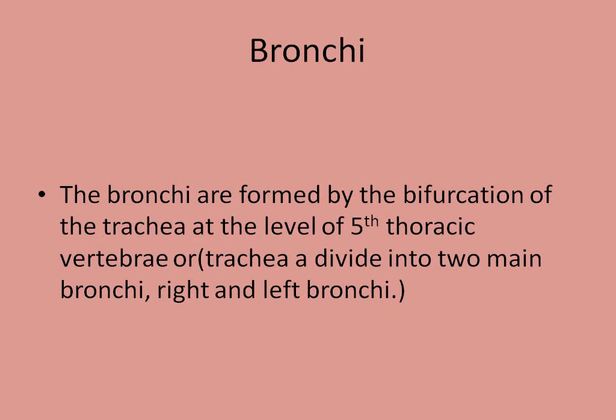Bronchi — if we look at a simple definition — these are air passages which allow the entry of air from the environment to the lungs. The bronchi are formed by the bifurcation of the trachea at the level of the fifth thoracic vertebra. At the fifth vertebra from the back, the trachea divides into two portions. We can simply say: the trachea is divided into two main bronchi — the left bronchus, which goes into the left lung, and the right bronchus, which goes into the right lung.